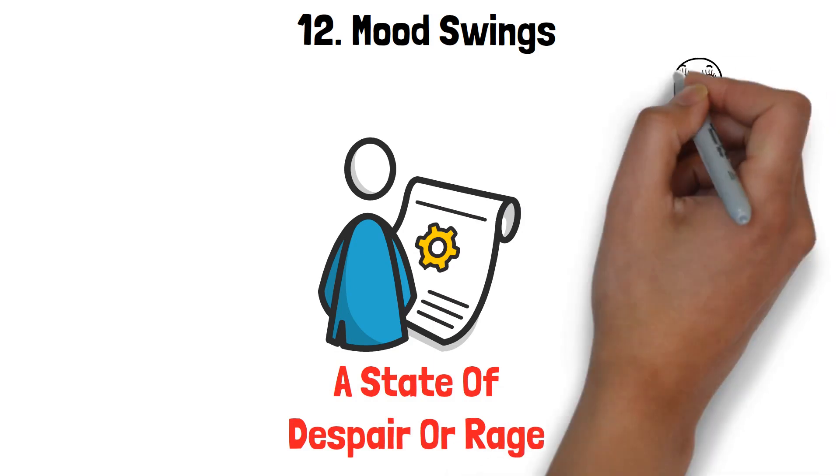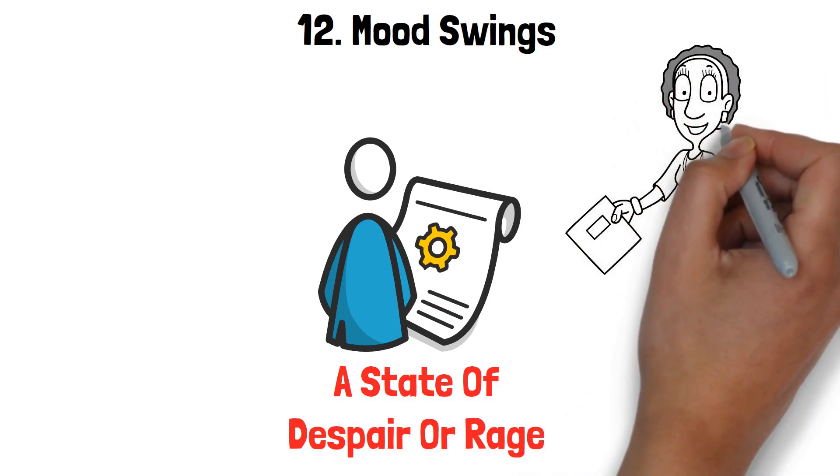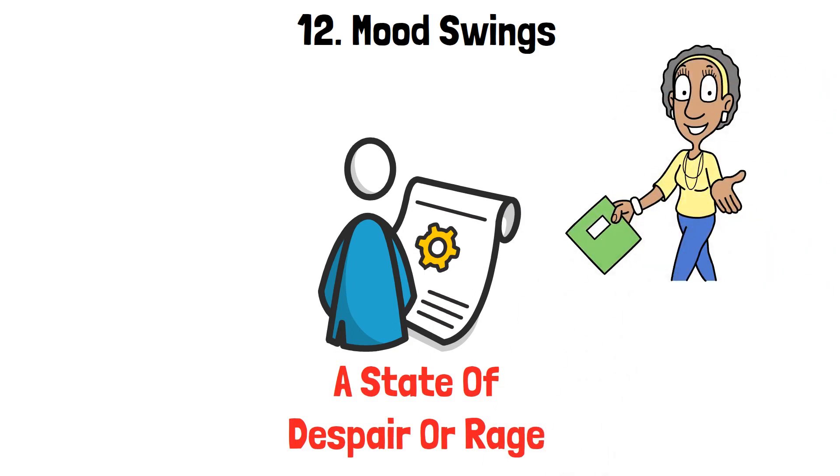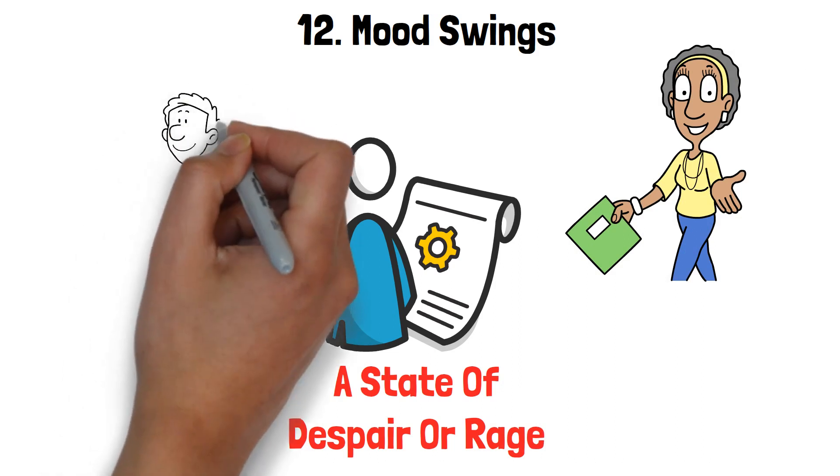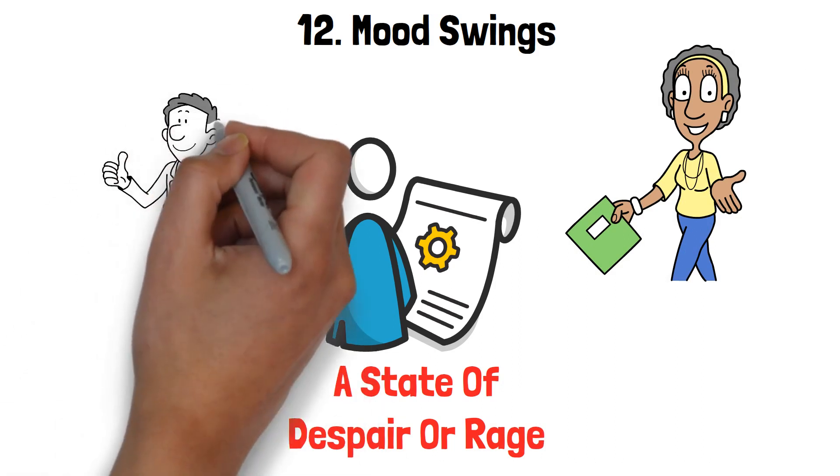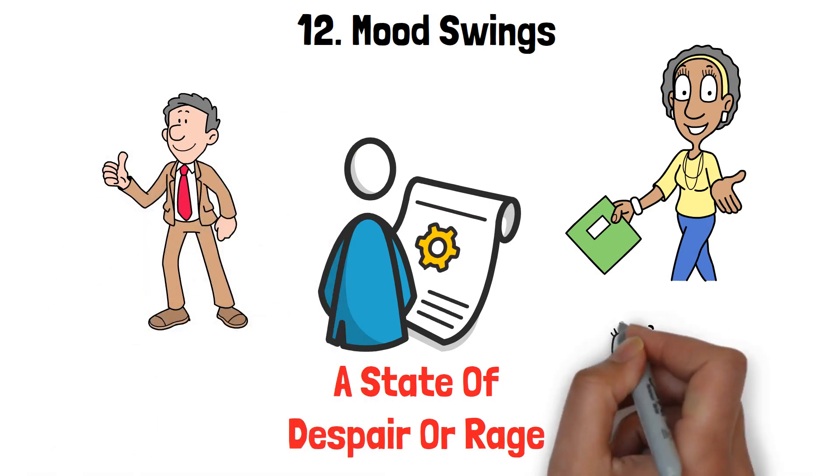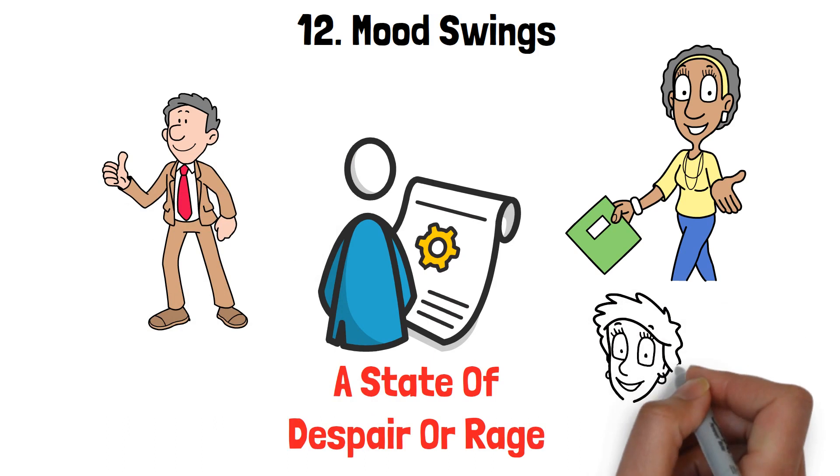These mood swings can be incredibly unpredictable and exhausting to navigate. It's like treading on eggshells, never knowing which version of her you'll encounter. This instability can create an atmosphere of constant tension, leaving you constantly on guard and emotionally drained. Understanding and preparing for these mood swings can be a vital aspect of self-preservation in such a relationship.